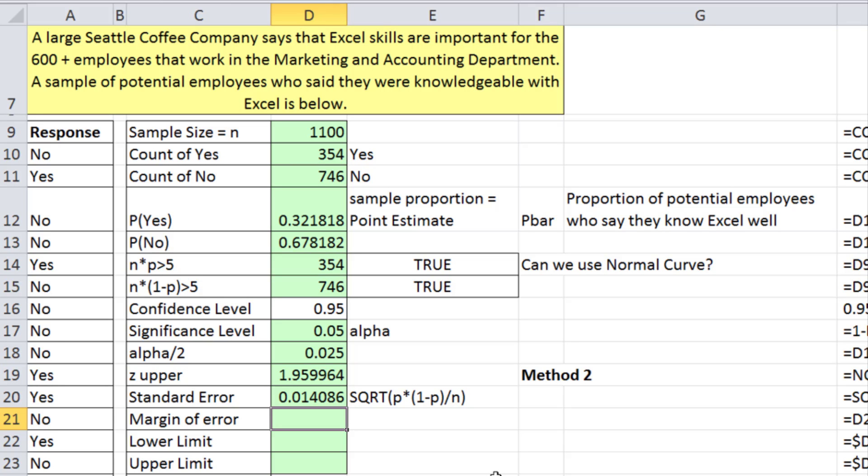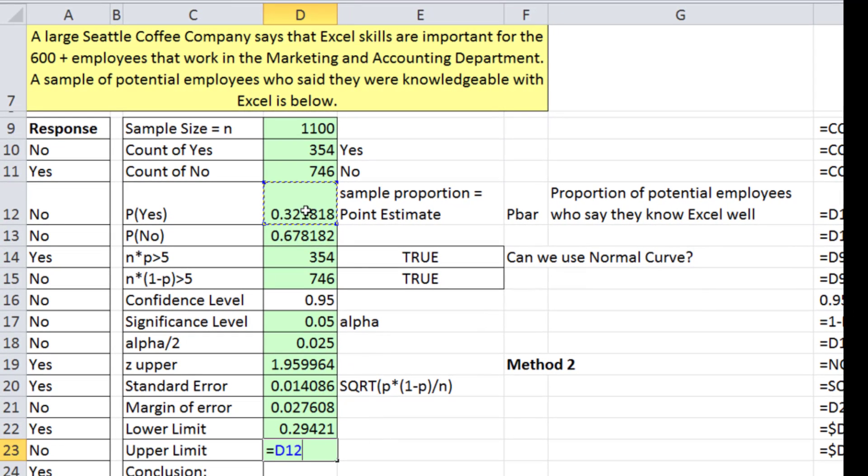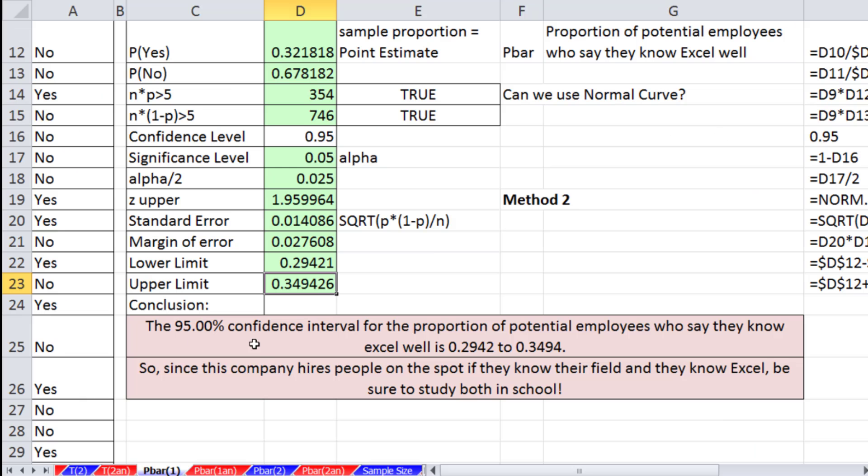Our margin of error - we're going to say z times the standard error. That's the amount to add on either side of our p-bar. The lower limit equals p-bar minus margin of error. The upper limit equals p-bar plus margin of error. So now we have an estimate. Our conclusion: The 95% confidence interval for the proportion of potential employees who say they know Excel well is 0.294 to 0.349. Somewhere in that interval, we're estimating at 95% confidence that our population proportion exists.